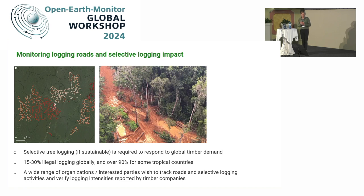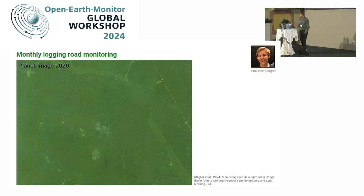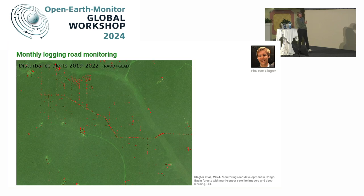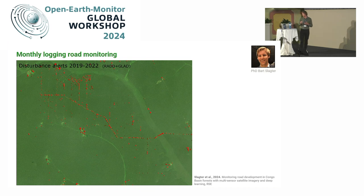Here we see a Planet image from 2020, and one from 2021 where logging roads appear. A year later, the signal already disappeared because of rapid canopy overgrowth. We see the RADD alert signal, and while RADD alerts can track logging roads and selective logging well in some regions — particularly where roads are wide — in landscapes where logging roads tend to be much smaller, it's much harder. That's the combination between the key alert systems, and we also add the annual Landsat-based loss from Madhan's dataset.